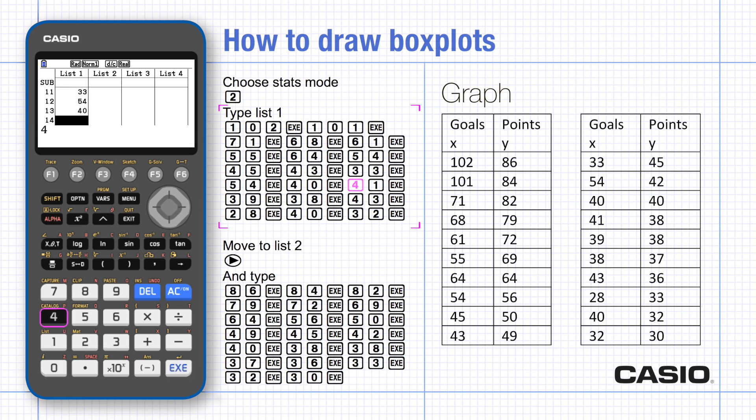When you've typed all the x-values, move the cursor to the right and then type list two from the beginning. Notice these lists don't have to be paired data.